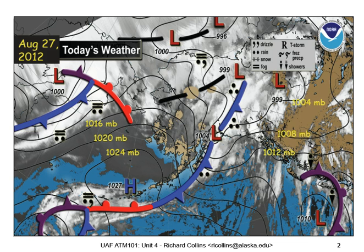This is a relatively complicated picture of highs and lows — not the simple textbook picture you'll see in analyses of synoptic scale weather systems. But it is real. It's the weather for August 27, 2012.